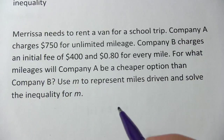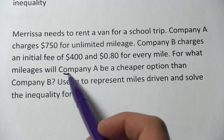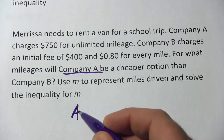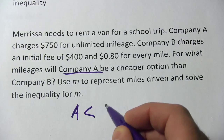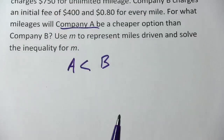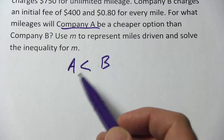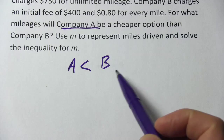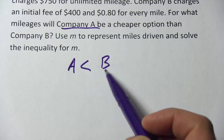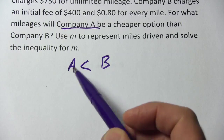Let's think about this for a minute. We want A to be cheaper than B, so we want A to be less than B. All we really need to do here is find out what kind of expressions we need to put in for A and B, and that needs to be the cost.